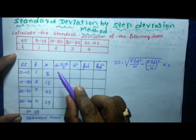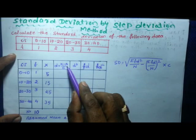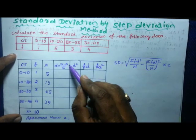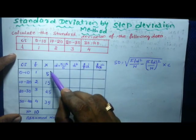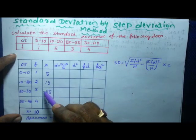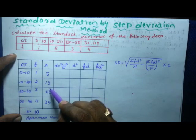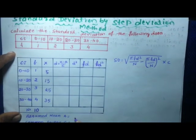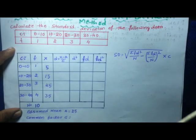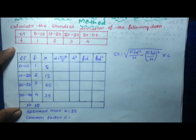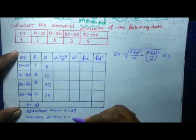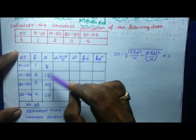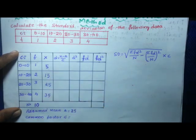Now find D, where D equals X minus A divided by C. Here A is the assumed mean. I am going to assume the mean as 25 — there is no middle number, so we take the bigger number. C is the common factor, which is the value that divides all the X values. The midpoints 5, 15, 25, and 35 are all divisible by 5, so the common factor C is 5.